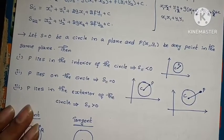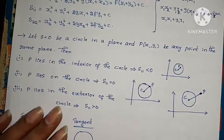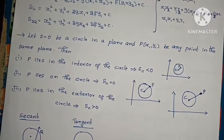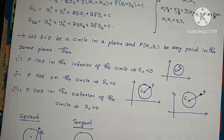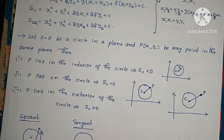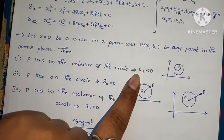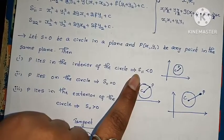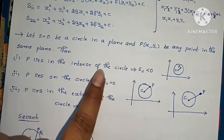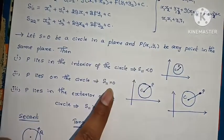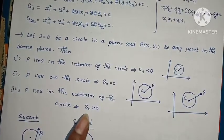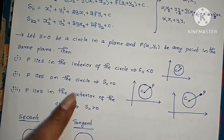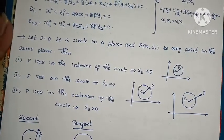If S11 is greater than 0, P lies exterior to the circle. This is a 2-mark important concept. For any point P: S11 less than 0 means interior, S11 equals 0 means on the circle, S11 greater than 0 means exterior.